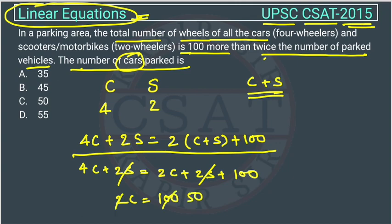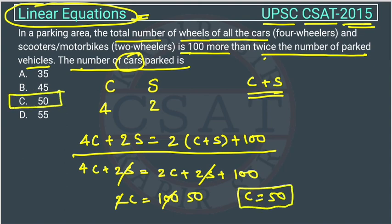Dividing by 2, the number of cars is 50. So the answer is option C. This is the kind of question they have asked in past years, and you just need to get the concept of how to form the equations.